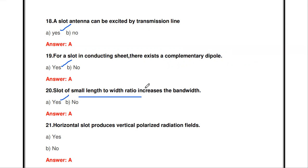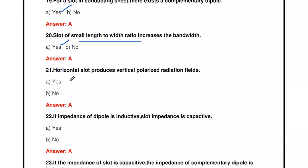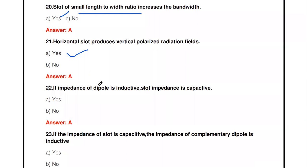The horizontal slot produces a vertically polarized radiation field — this is also true. In a slot antenna, the horizontal slot produces vertically polarized waves, and conversely, the vertical slot produces horizontally polarized waves.